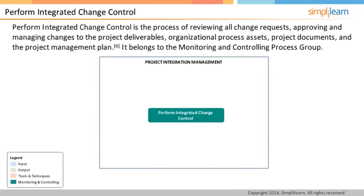Perform Integrated Change Control is the process of reviewing all change requests, approving and managing changes to the project deliverables, organizational process assets, project documents, and the project management plan. This is where all the recommendations for changes, corrective actions, preventive actions, and defect repairs are evaluated across all the knowledge areas and either approved or rejected.